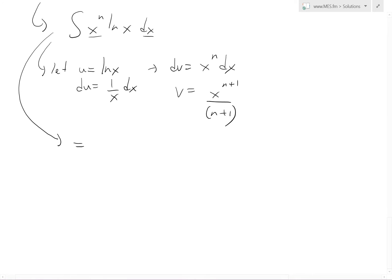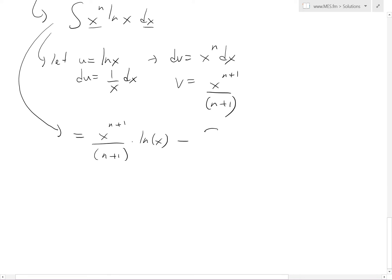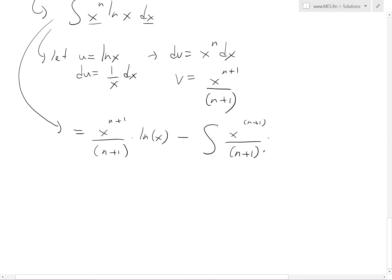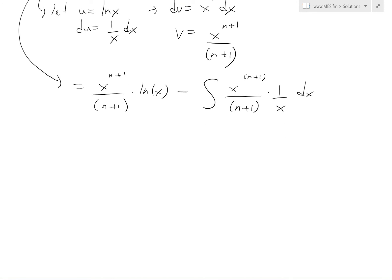So we get those right there. So this equals to u, which is ln x, v is this. So we have it as x^(n+1) divided by n plus 1 times it by ln x. And then minus the integral of v du, integral right here of x^(n+1) divided by n plus 1 times it by du, which is 1 over x, and then dx times it by 1 over x dx right there.